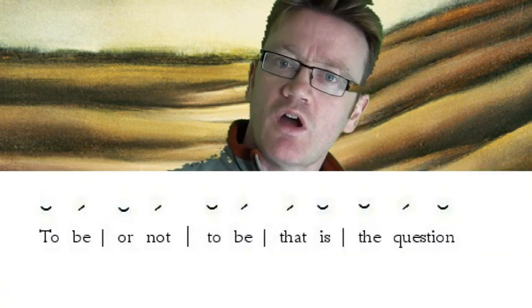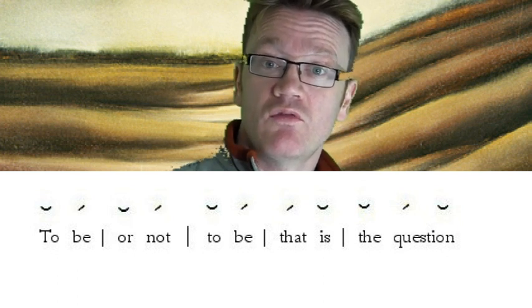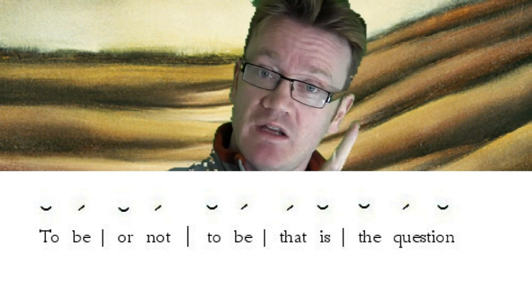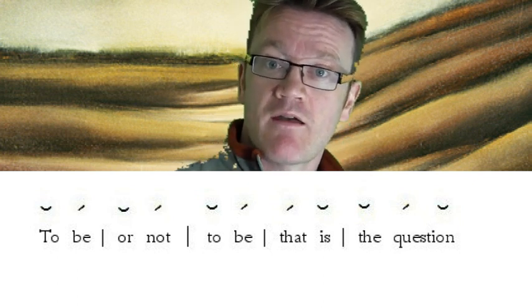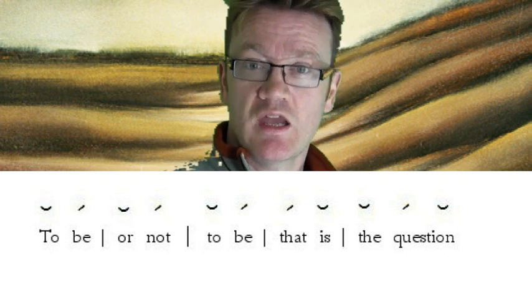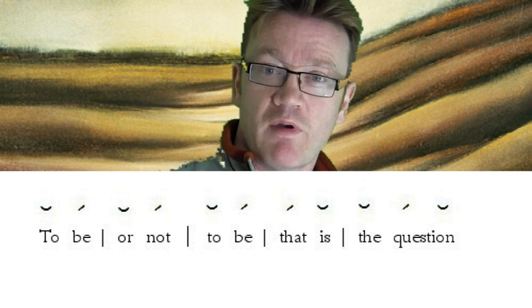Once you've worked out where the beats go in a particular line of poetry, a way of marking it out is to have a diagonal line going over the heavy stresses and a little bowl-shaped line going over the soft stresses, which you can see here in this particular scanned line of poetry.